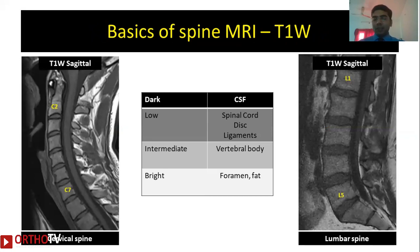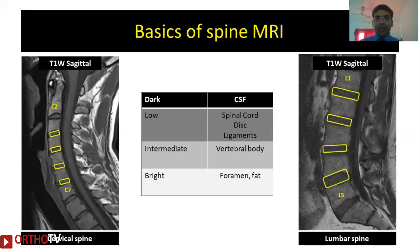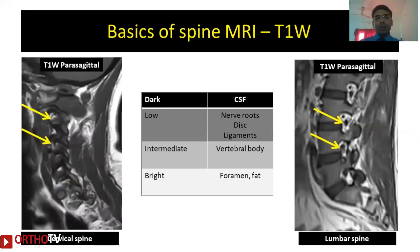On T1-weighted images the majority of structures are dull in color, except the vertebral body which is of intermediate intensity. An important use of T1-weighted parasagittal images is visualization of foraminal structures: because of the hypointense surrounding structures, the foramen is very well demarcated, and any foraminal stenosis or compression can be very well visualized on T1-weighted images.